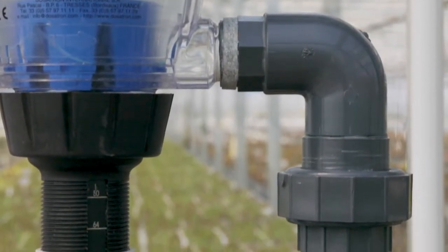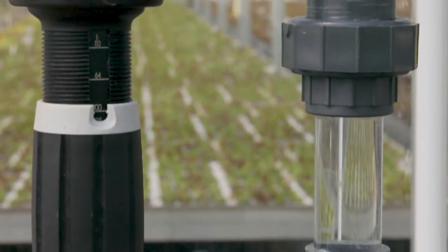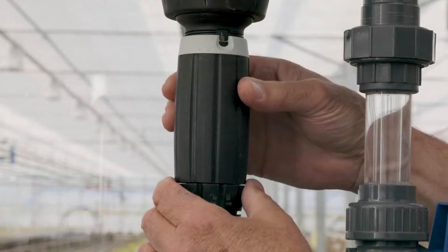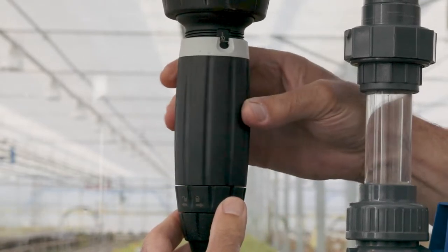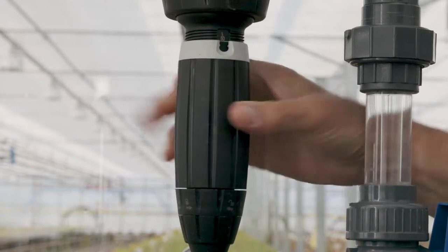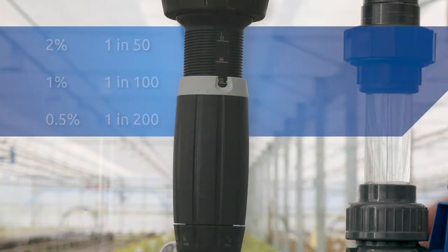The dilution of the concentrated feed is set by these marks on the actual throat of this inlet pipe. One in fifty, one in one hundred and further down is a one in two hundred dilution. So that's two percent, one percent and half a percent dilution.